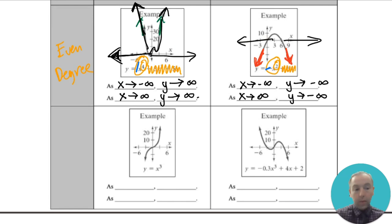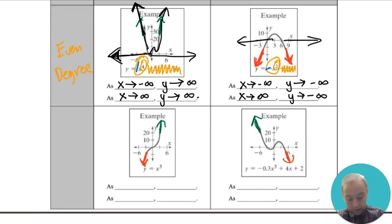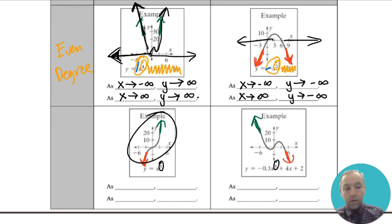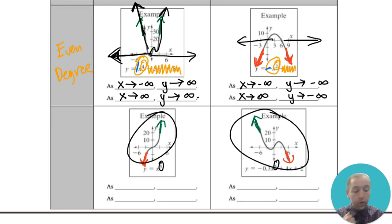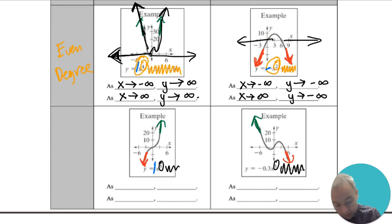The bottom two graphs are odd degree polynomials — one end goes down while the other goes up, and then the other example is the reverse. Because the ends go in different directions, it has to be an odd degree polynomial, which matches since the highest exponents in those examples are odd numbers. What makes it go down-left and up-right versus the opposite is the sign of the leading coefficient. All the lower degree terms don't affect the end behavior at all — it only comes from the highest degree term.